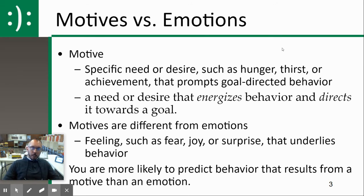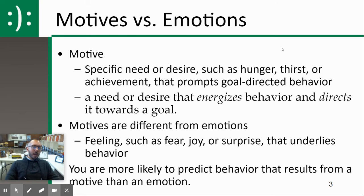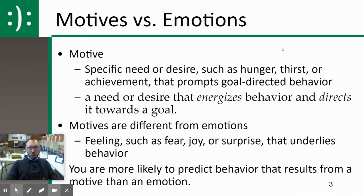Motives and emotions are different. Emotions are like fear, joy, surprise, and sadness — they underlie a behavior but might not really predict behavior. For example, if I have a motive, I have a need. Let's say I'm driven because I'm thirsty, and so that's going to be my need, my tension, my drive that's going to get me to go do a goal-directed behavior.